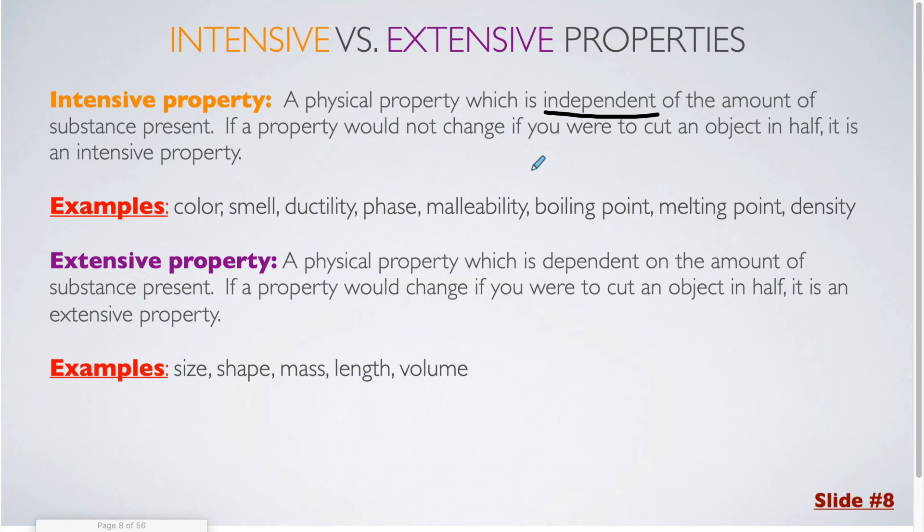Other examples of intensive properties could be the smell, ductility, which is the ability of a metal to be drawn out into a wire. So for a boiling point and melting point, if we're talking about the Celsius scale, water boils at 100 degrees Celsius. Water melts at 0 degrees Celsius. It doesn't matter how much water we have in either of those two scenarios. The temperature at which those phase transitions occur is a constant. So again, that shows that it doesn't matter how much of the water we have in those examples. So intensive properties. Density is another good example, which we will get to on the next slide. We're going to go into that one in a little more detail.